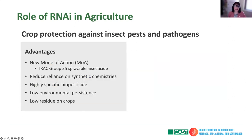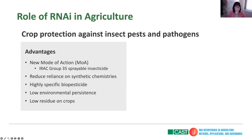What are some of the advantages of using RNAi for crop protection? First, it is a new mode of action — particularly important for many insects and fungi that have evolved resistance to other modes. For insecticides, the insecticide resistance action committee now characterizes RNAi as Group 35. Another advantage is that it reduces reliance on synthetic chemistries. It is a highly specific biopesticide with low environmental persistence and low residue on crops.